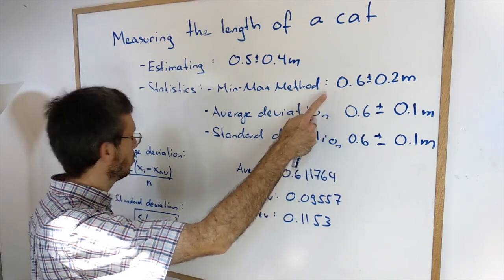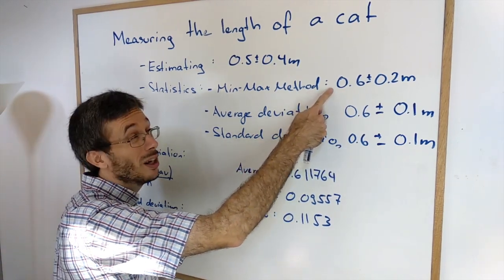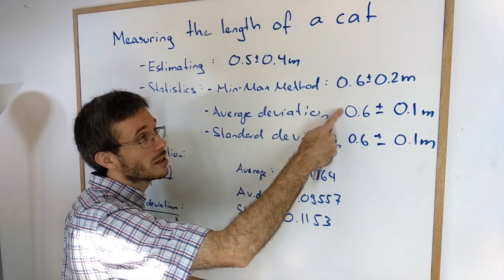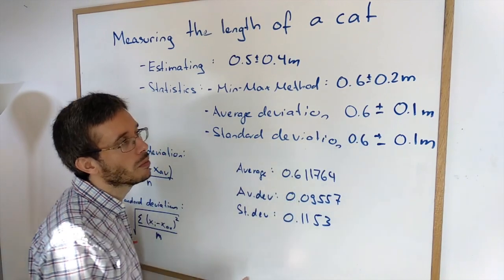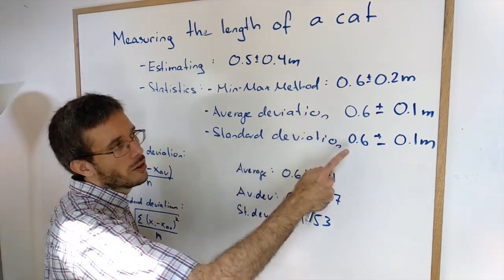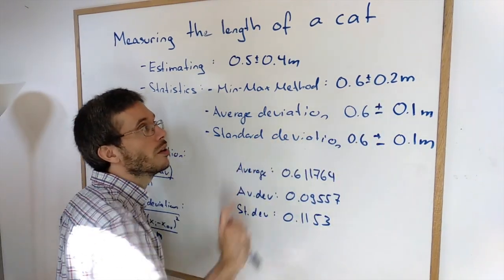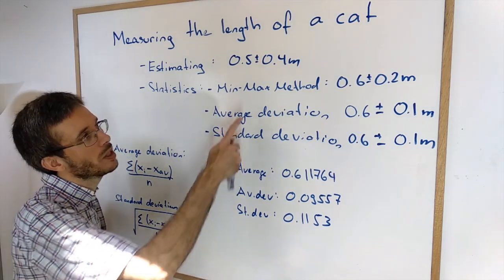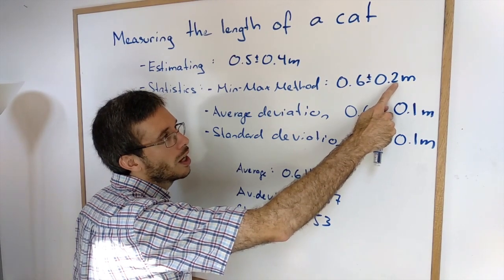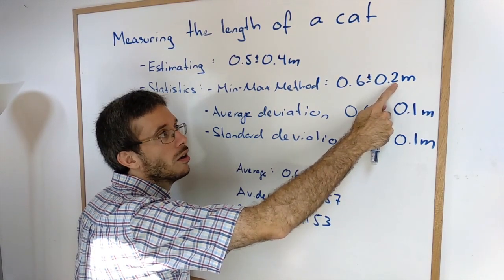It could have been different here because here I used max plus min over 2 and not the average. So here that's a coincidence that this is exactly the same number. Here it has to be the same number. Then for the uncertainty itself the min max method is the one that takes in every single measurement. So every measurement is in. So I have the highest uncertainty.